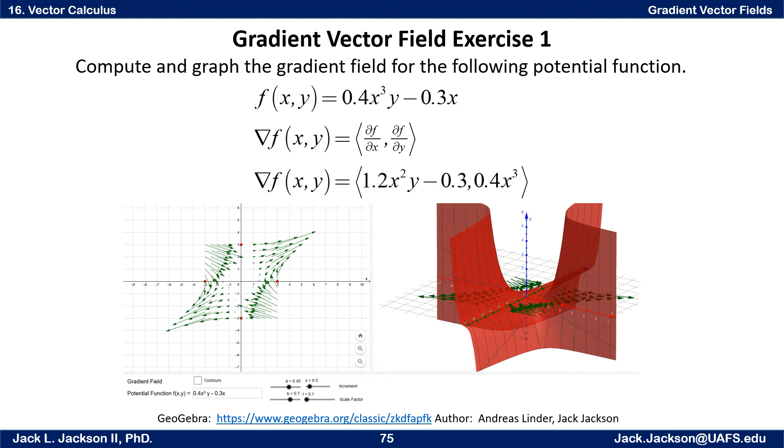So the gradient of this function is a 2D vector field. The first component is the partial derivative with respect to x of the original potential function, then comma. And the y component is the original potential function's partial derivative with respect to y.